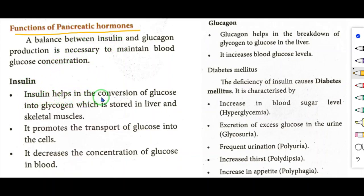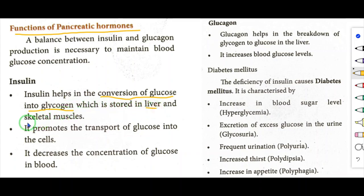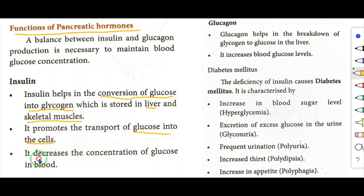Insulin helps the conversion of glucose into glycogen, which is stored in liver and skeletal muscles. It promotes the transport of glucose into the cells. It also decreases the concentration of glucose in blood.